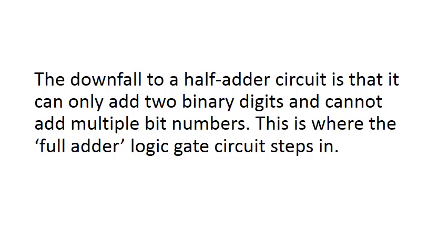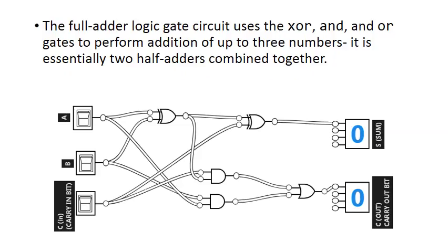The downfall to a half adder circuit is that it can only add two binary digits together and cannot add multiple bit numbers. This is where the full adder logic gate circuit steps in. The full adder logic gate circuit uses the XOR or exclusive OR, the AND, and the OR gates to perform addition of up to three binary numbers. It is essentially two half adders combined together.